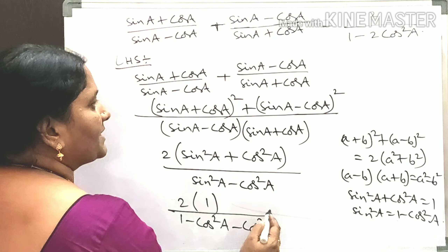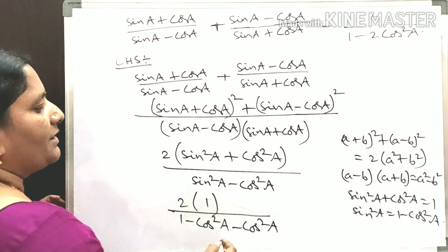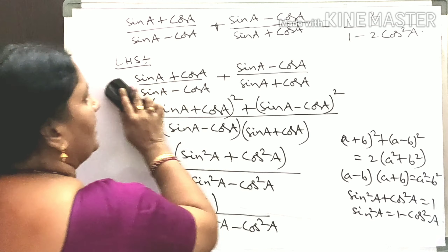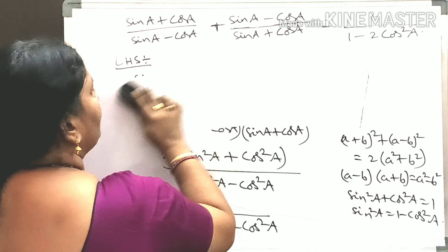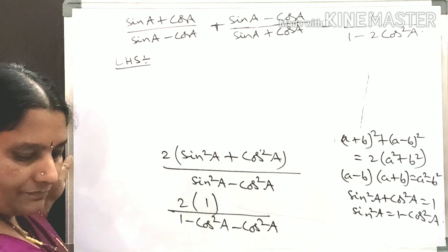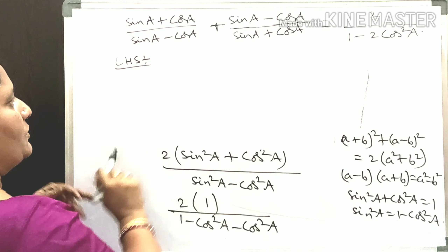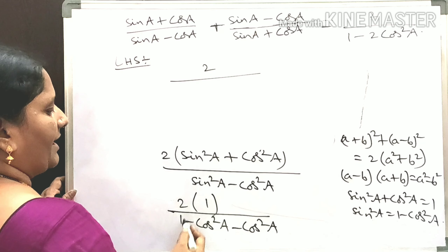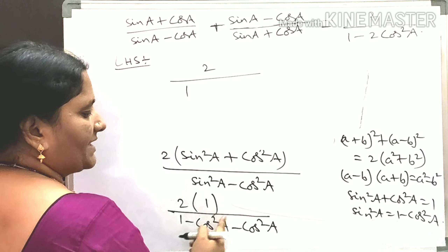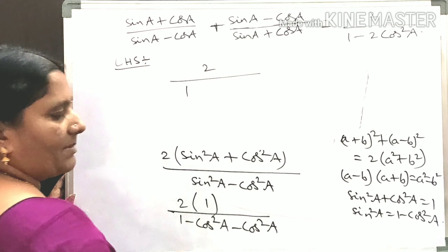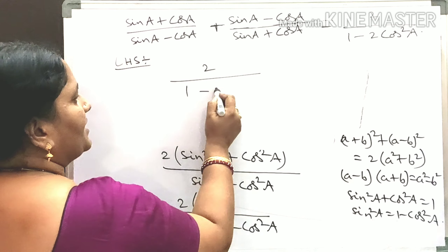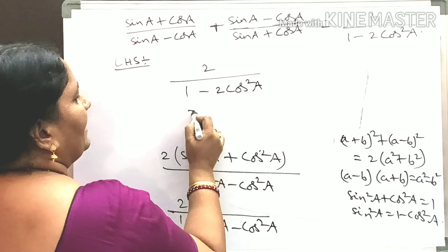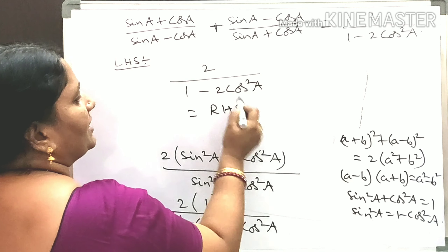So finally the numerator is 2 × 1, which equals 2. The denominator is 1 - cos²A - cos²A, which equals 1 - 2cos²A. Therefore the result is 2/(1 - 2cos²A), which equals the RHS.